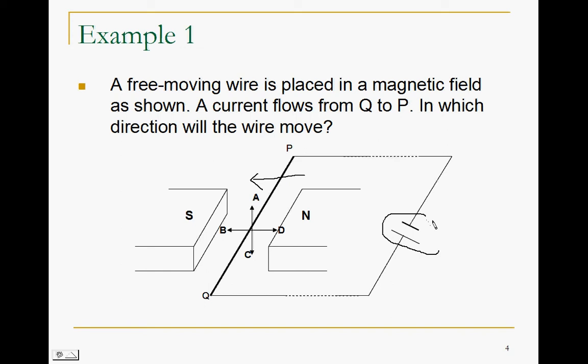In this case, the current is going down, and to the other side, the current is going up. So using Fleming's Left Hand Rule, FBI, B is pointing from right to left. I is going towards P. What is the direction of the force? The force is obviously acting upwards. So as a result, the answer is A.